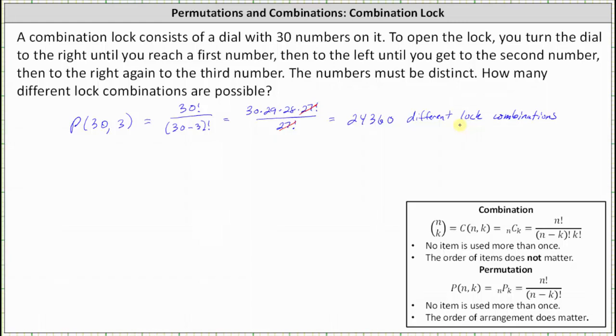Before we check this on the calculator, I do want to show a second approach using the multiplicative principle. We can think of selecting the three numbers as three events, where the first event is selecting the first number in which there are 30 choices.